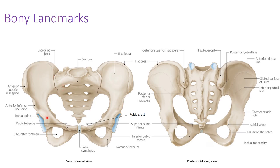As we move anteriorly, we have our pubis, and then we have our ischium down in the back. The big components to know are the sacrum, ilium, and ischium. Up at the top of the ilium, a specific landmark you need to know is the anterior superior iliac spine, or ASIS.